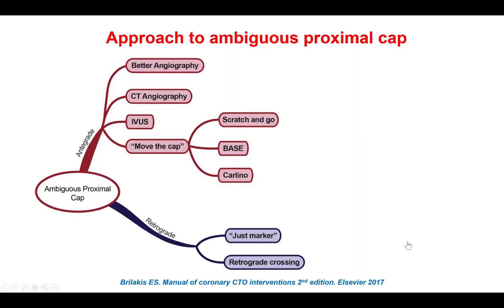This is an example of an ambiguous proximal cap. There are different ways one can resolve ambiguity. One is to perform better angiography in various views, although in our particular case it was a blunt stem and that could not help. Another is to do a CT angiogram, which was actually done in this case, but could not help except for showing that this was a long segment of occlusion.